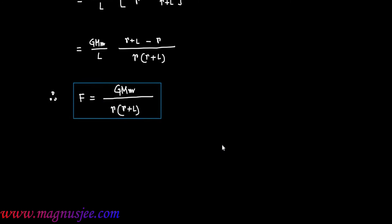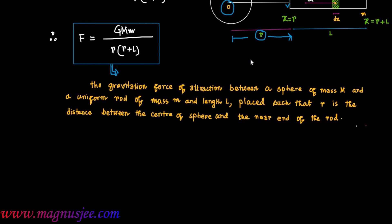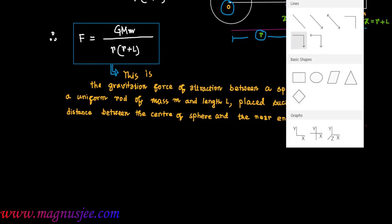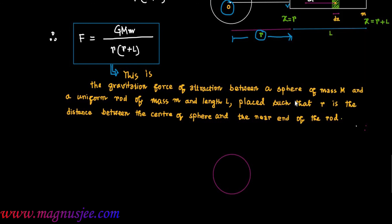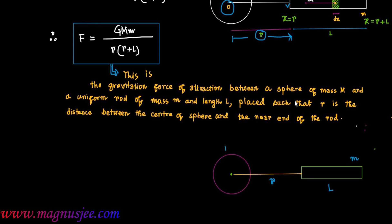Therefore, F equals G·M·m divided by r(r plus L). This is the gravitational force of attraction between a sphere of mass capital M and a uniform rod of mass m and length L, placed such that r is the distance between the center of the sphere and the near end of the rod. The rod is attracted by the sphere with a force F equal to GMm divided by r(r plus L).